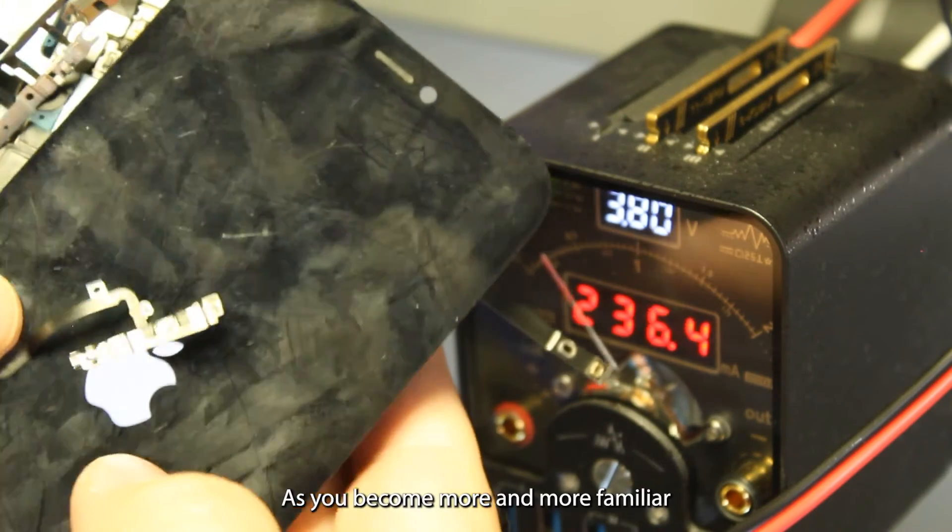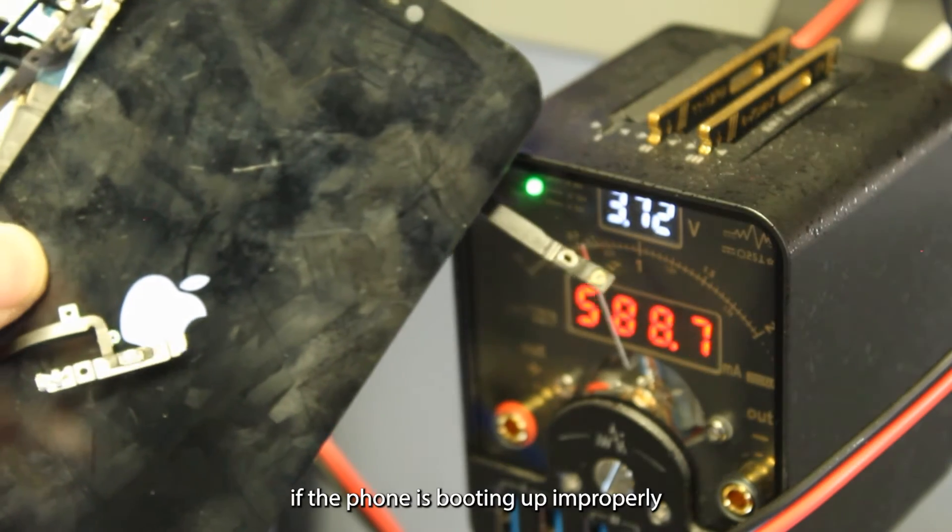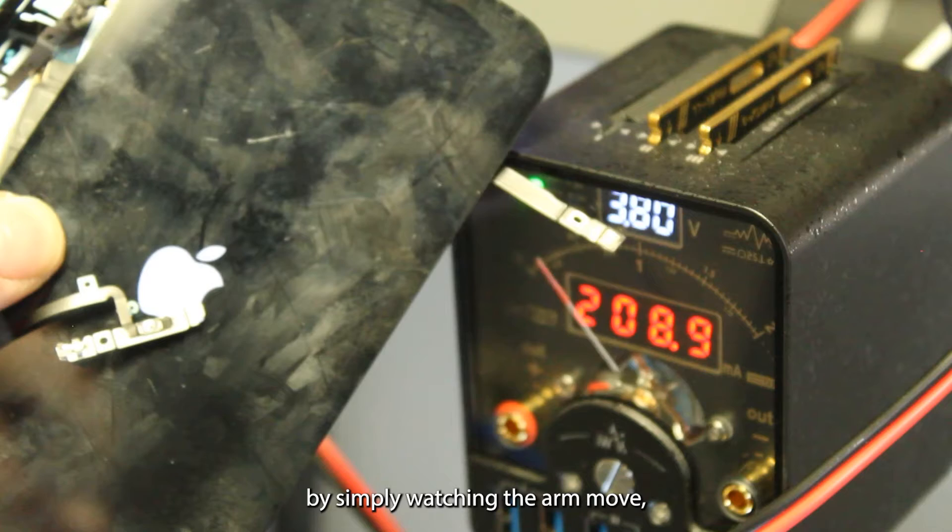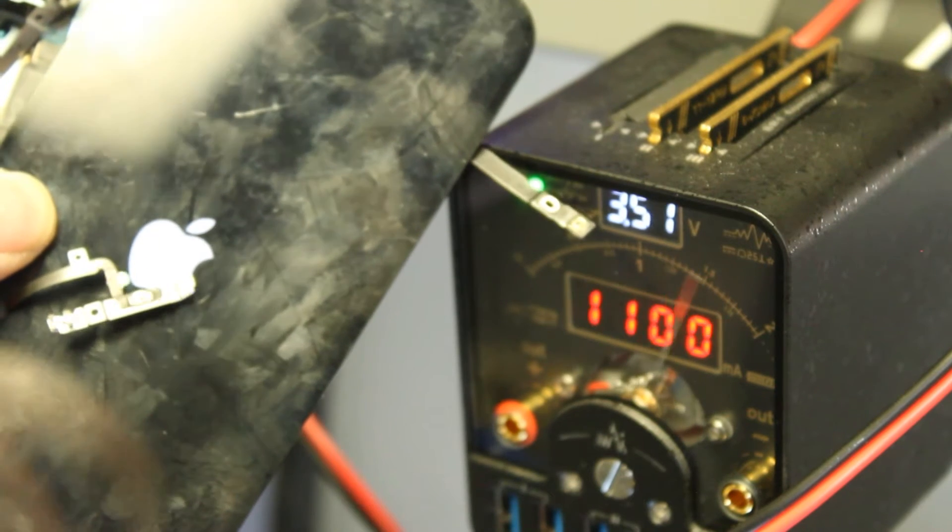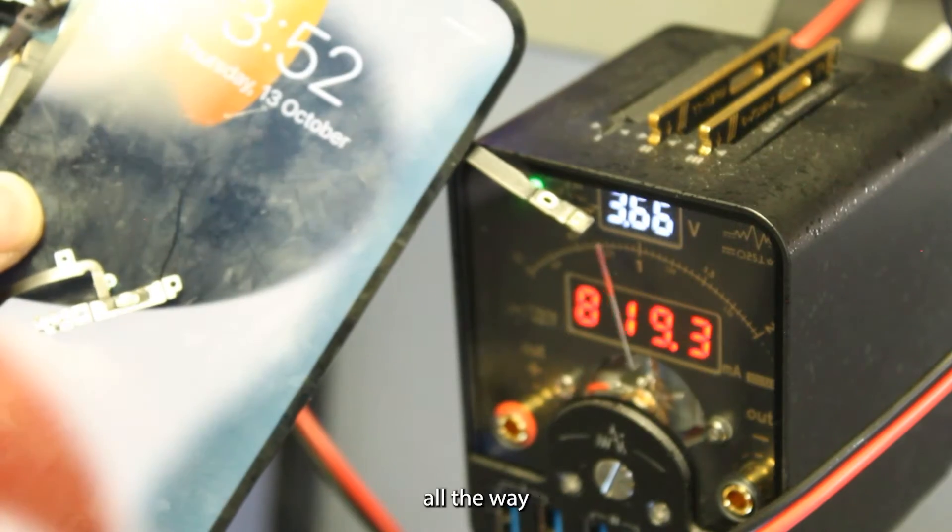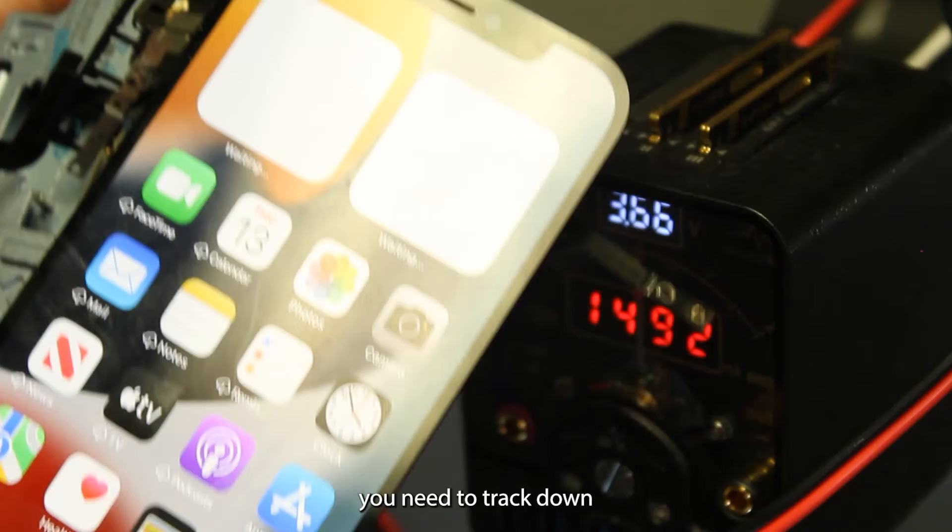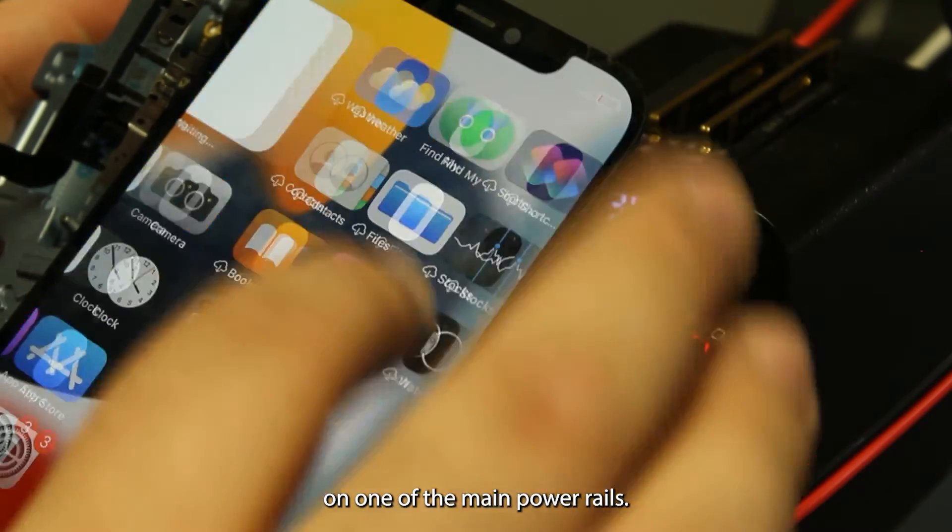As you become more familiar with these tools, you'll be able to notice if the phone is booting up improperly by simply watching the arm move. Especially if there's a short, you'll see the arm slam all the way to full power where you know that there's a short that you need to track down on one of the main power rails.